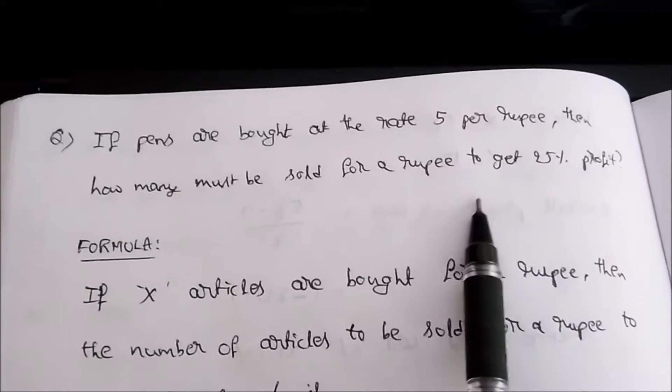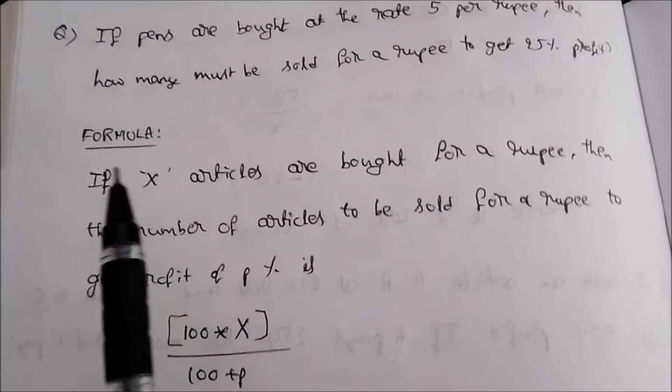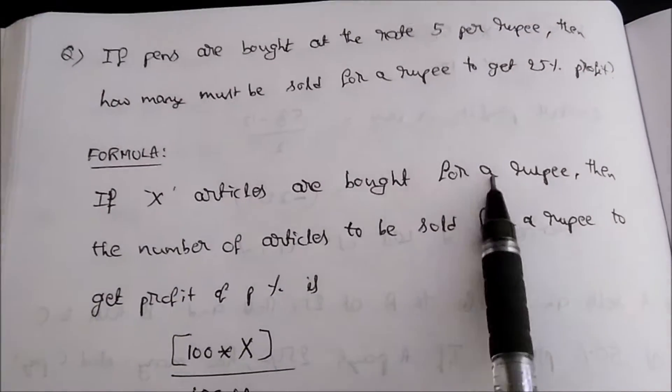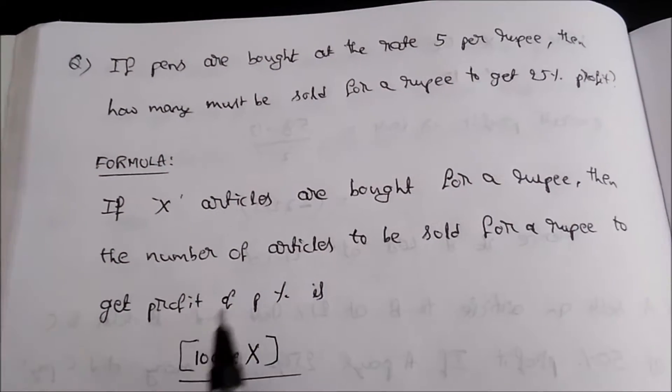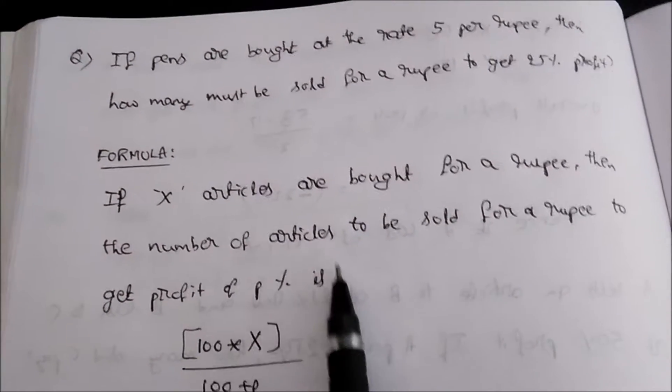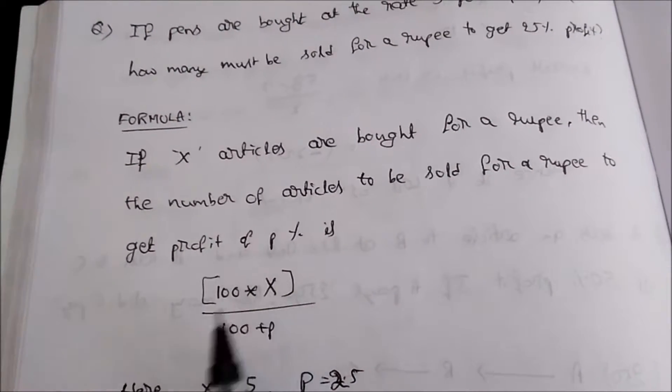There is a simple formula for this. If X articles are bought for a rupee, then the number of articles to be sold for a rupee to get profit of P percent is 100 times X divided by 100 plus P.